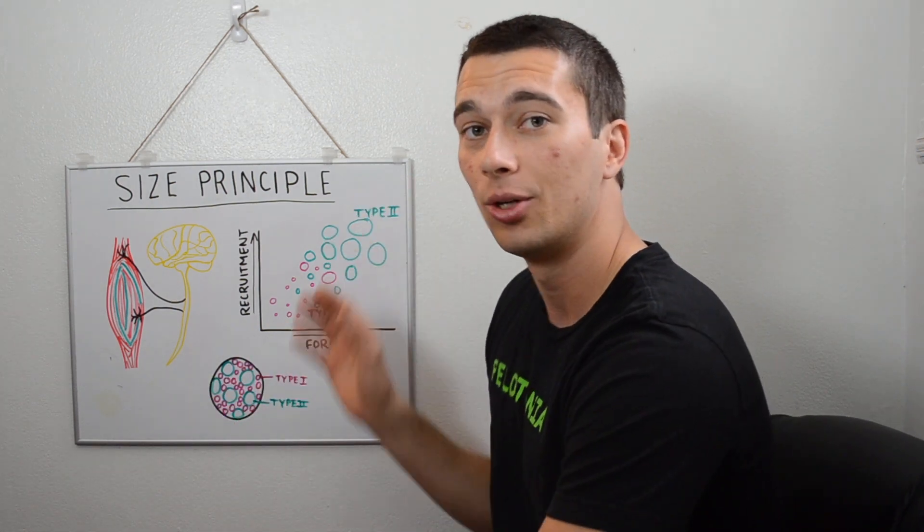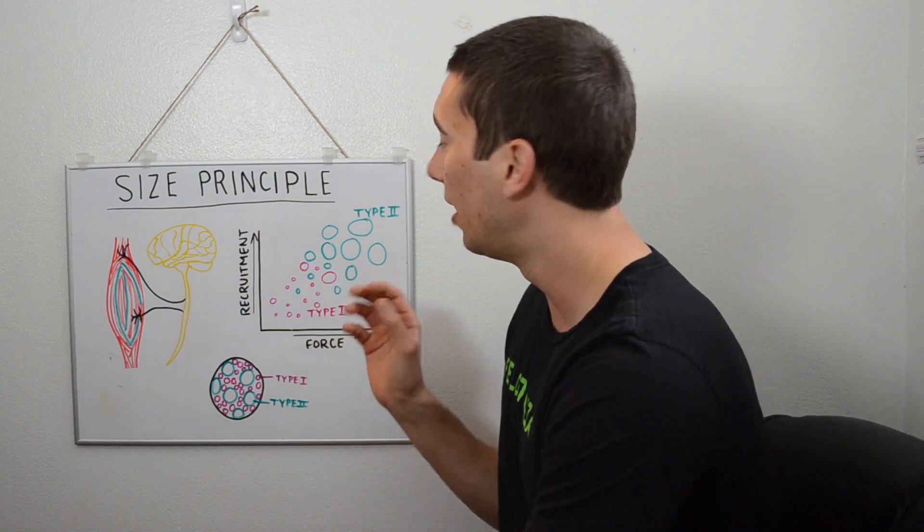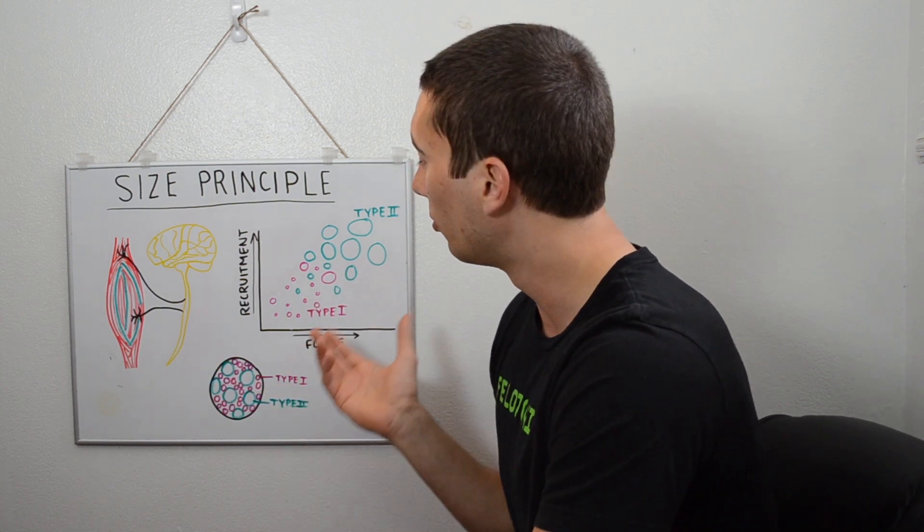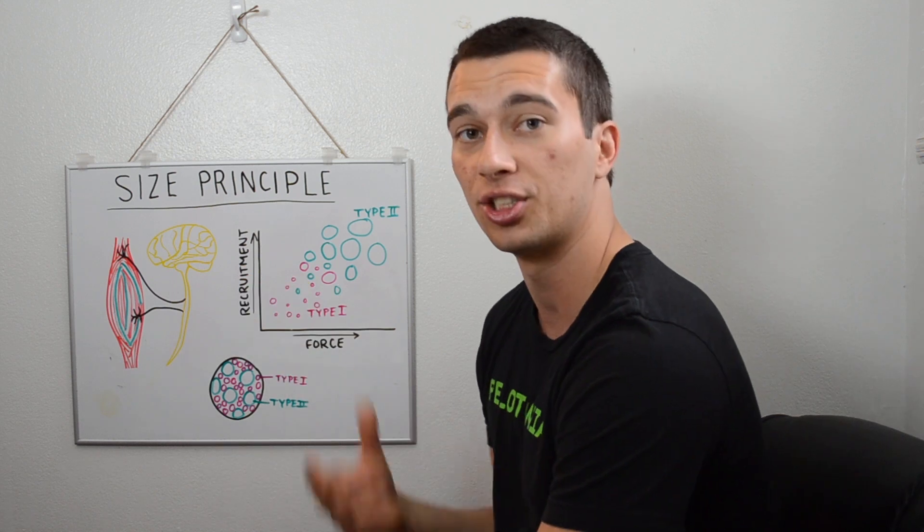Our type 2x is really kicking in at the very top of that, whenever we're thinking about one rep maxes and high recruitment activities such as sprints and jumps.